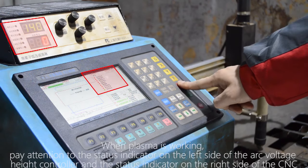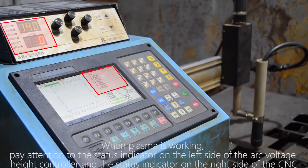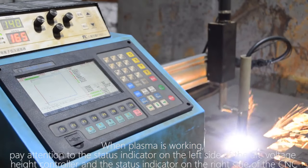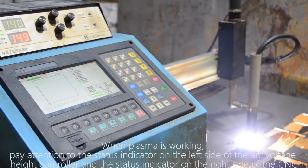When plasma is working, pay attention to the status indicator on the left side of the arc voltage height controller and the status indicator on the right side of the CNC.